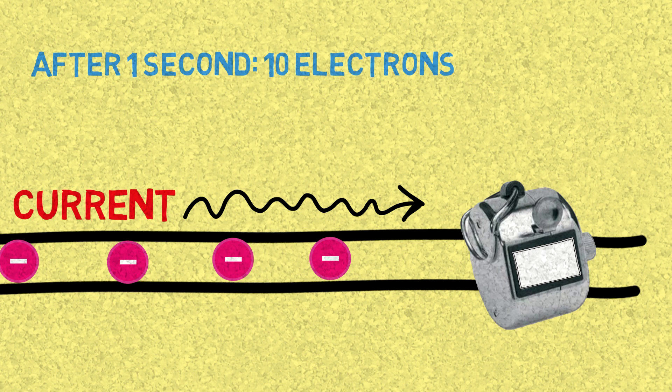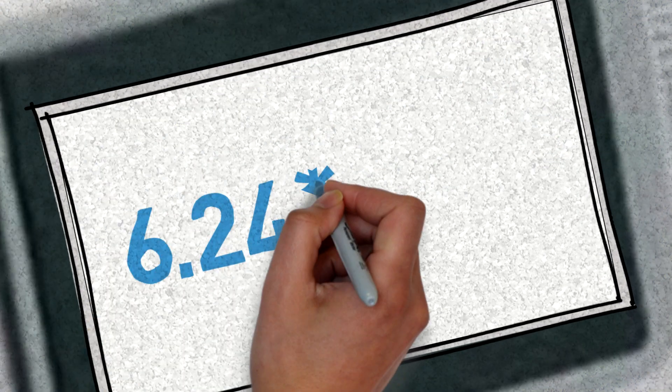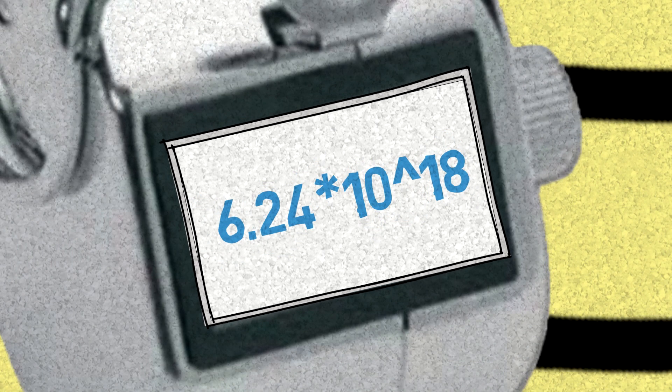Now imagine that the current in the circuit because of the battery makes exactly 6.24 times 10 to the 18th power electrons pass through that point in one second.